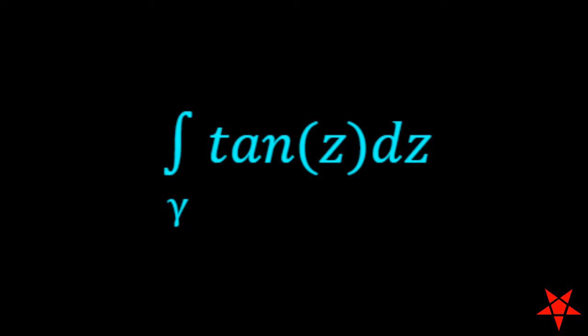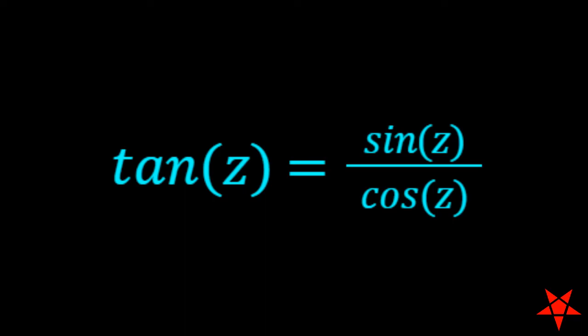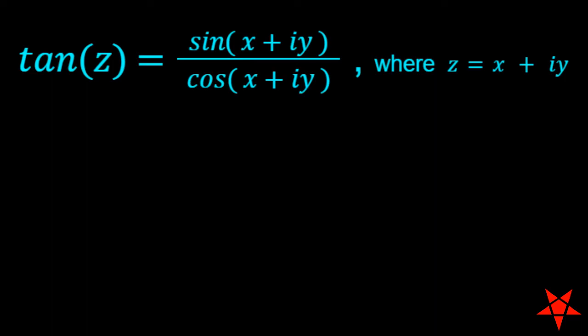Looking at the problem at hand, we must determine where the singularities are located in the complex plane for the function tangent of z. Let's break tangent of z down into sine of z and cosine of z before splitting z into its real and imaginary components.